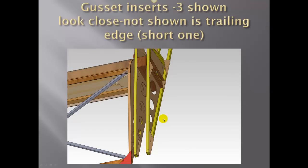Shown here are the three added gussets and I'll just put my cursor right here. We got an inside one on rib 12, an outside one on rib 12, and an inside one on rib 13.